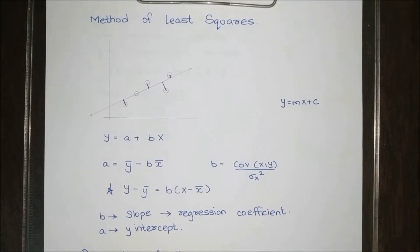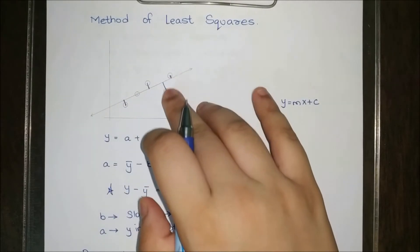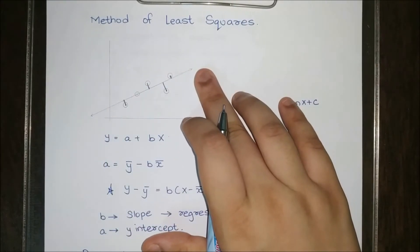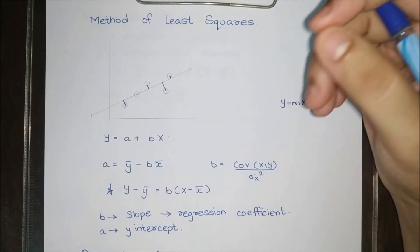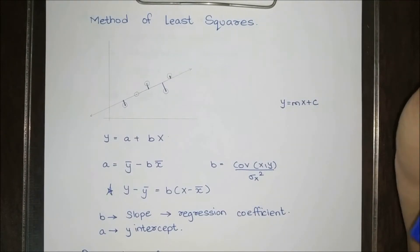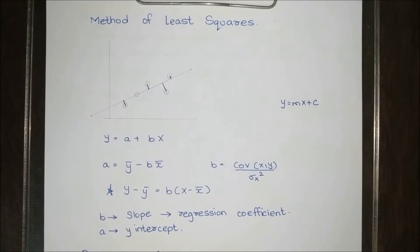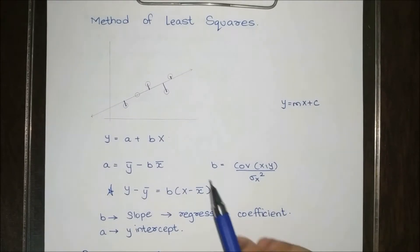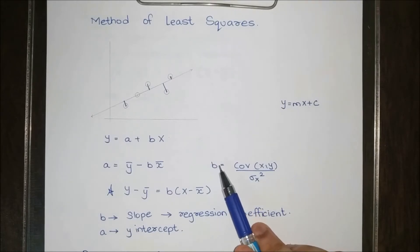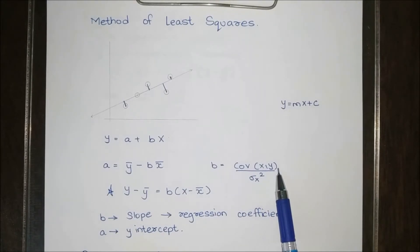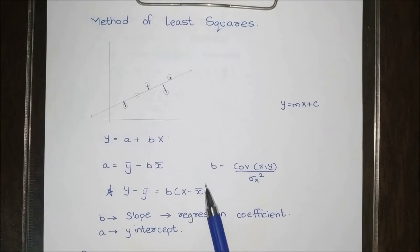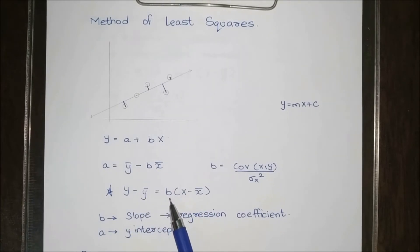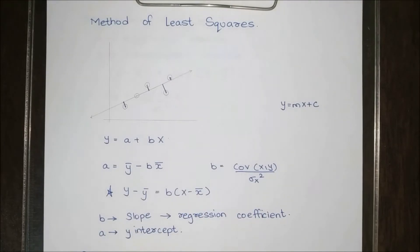To recap: we have some plotted points, and we are trying to make a line through these points such that the sum of squared distances between the points and the line is minimized. From this, we calculate b — the slope of the line — as the covariance between x and y divided by the variance of x. Then to find the line, we use: y minus y-bar = b times (x minus x-bar).